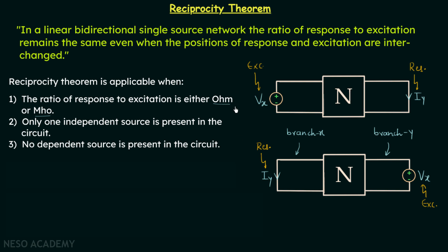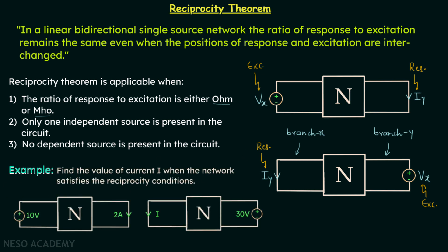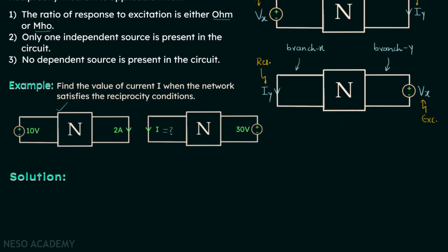Now we will move on to our example problem to understand reciprocity theorem in a better way. We are required to find the value of current I when the network satisfies the reciprocity conditions. We have a network N satisfying all three reciprocity conditions, and it is a linear bidirectional single source network. We need to find current I in this configuration. We will first focus on case number one and find out the ratio of response to excitation.